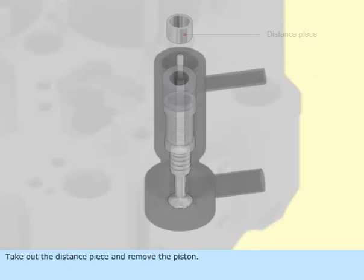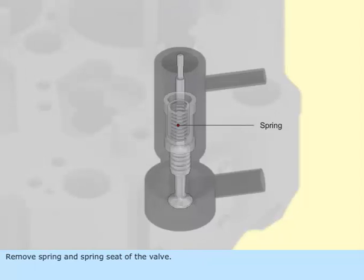Take out the distance piece and remove the piston. Remove spring and spring seat of the valve.